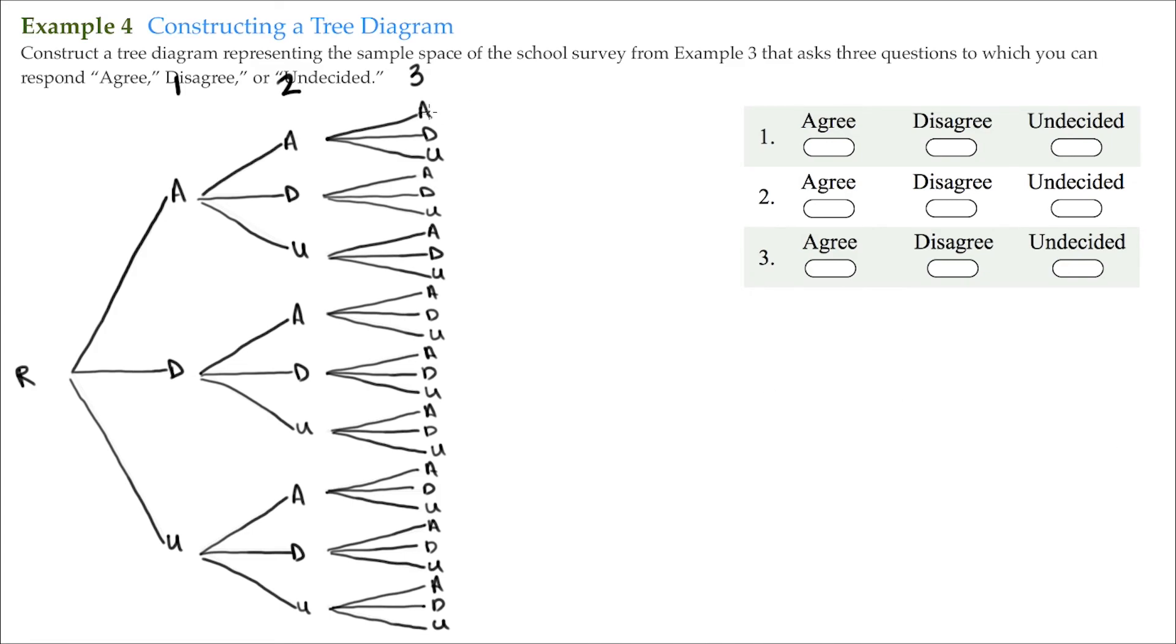And you'll notice that if you go ahead and add up the last column here, it's going to come out to 27 different responses, which is what we concluded from the previous example.